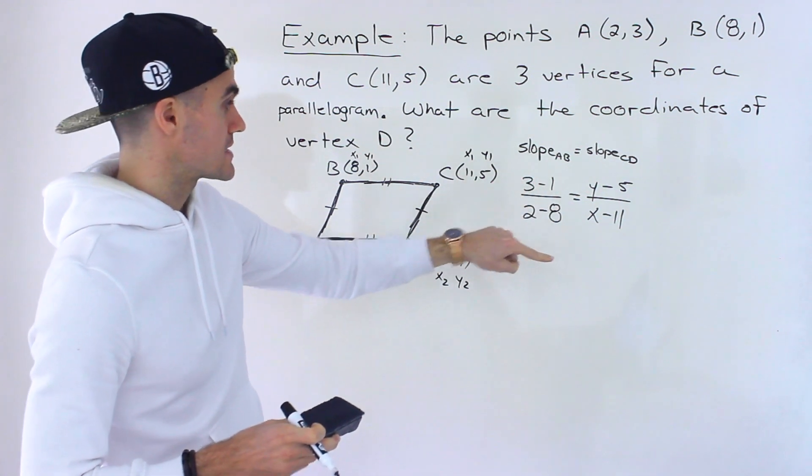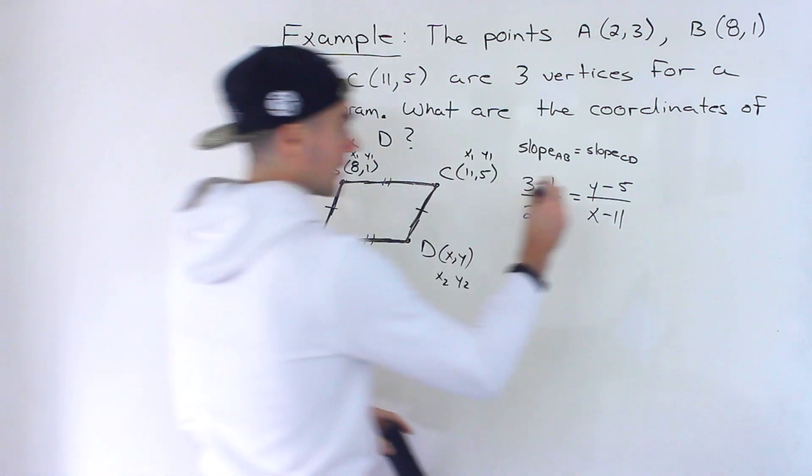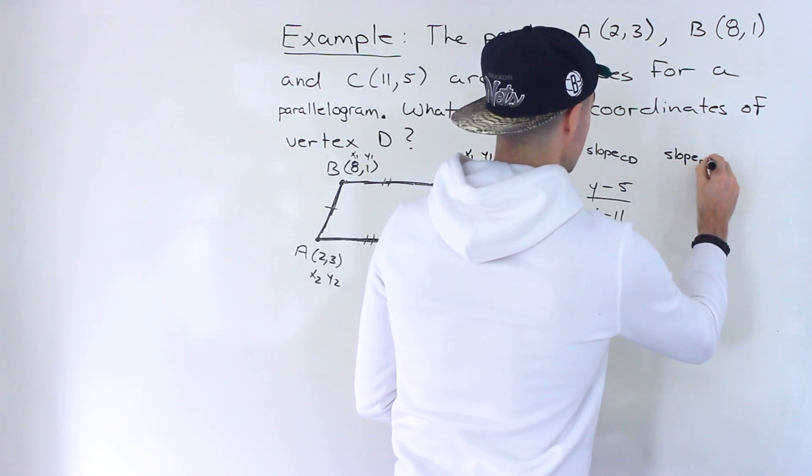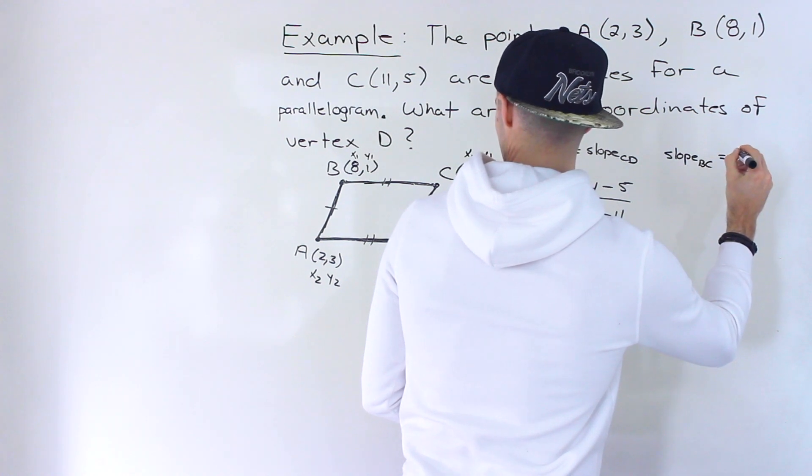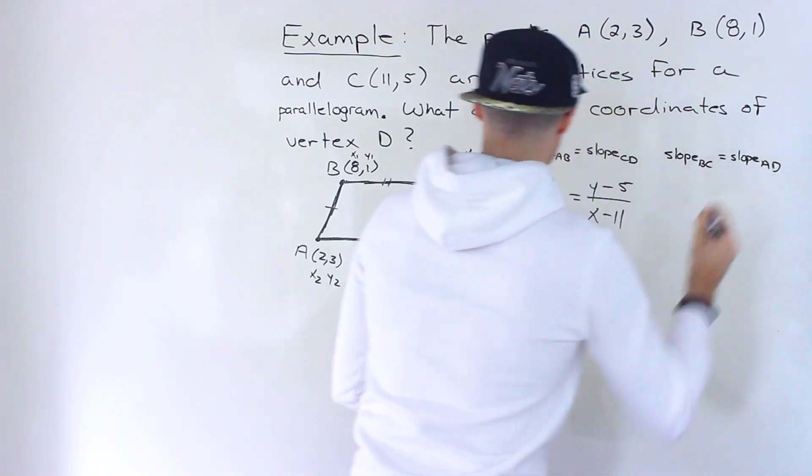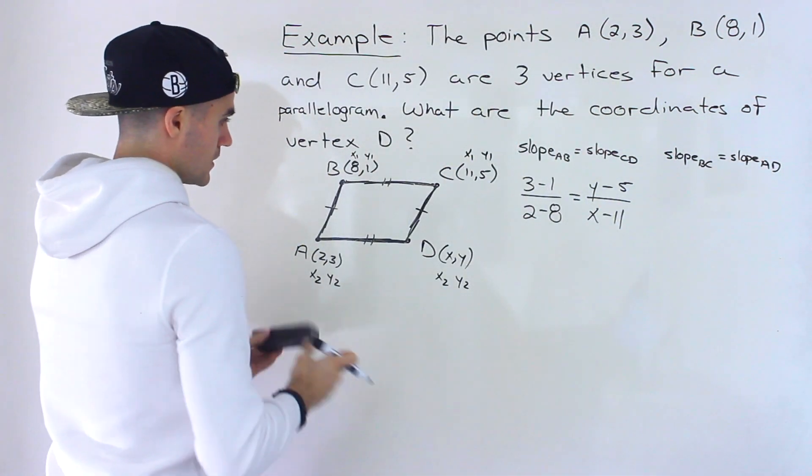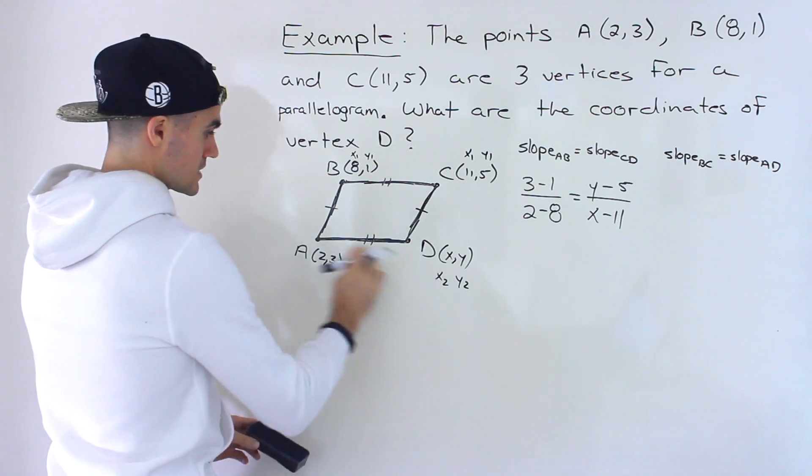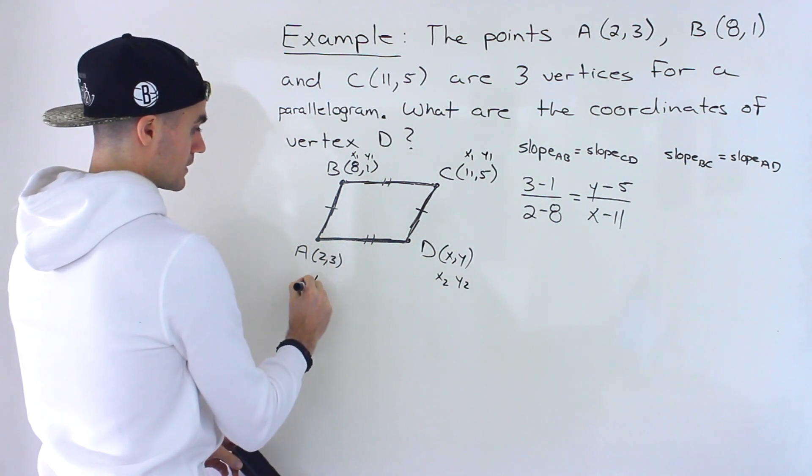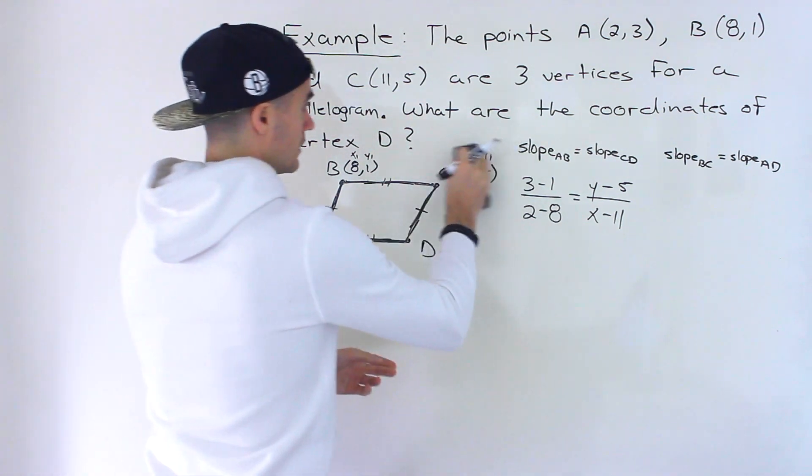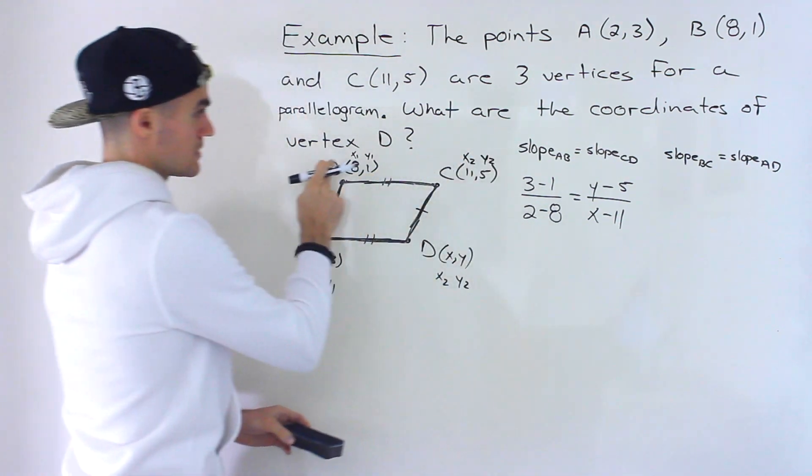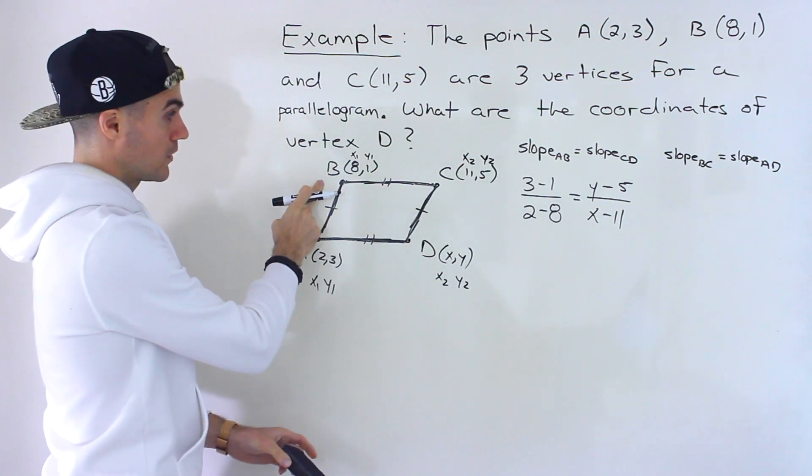And then I'm going to create the second equation. The second equation, we're going to have the slope of BC equaling the slope of AD. So relabeling these over here, if we're working with this line here, this is X2, Y2, I'm going to let this be X1, Y1. Then I'm going to let this be X2, Y2. This is going to be X1, Y1.